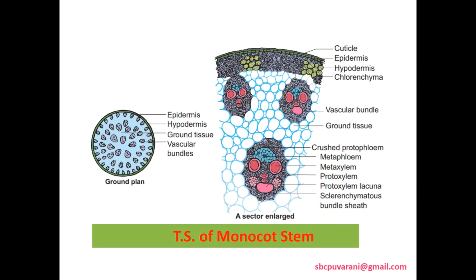Transverse section of monocot stem contains a thick cuticle and a single-layer epidermis. Epidermis hairs are absent. The ground tissues are not differentiated into cortex and pith. Hypodermis is generally sclerenchymatous. It has no distinct endodermis and pericycle. Epidermis contains stomata and bulliform cells. The scattered vascular bundles are surrounded by sclerenchymatous bundle sheath. Each vascular bundle is oval, collateral and closed in structure.